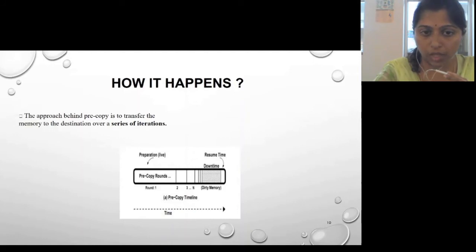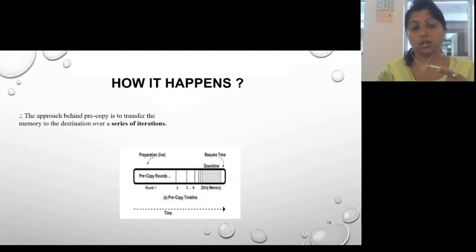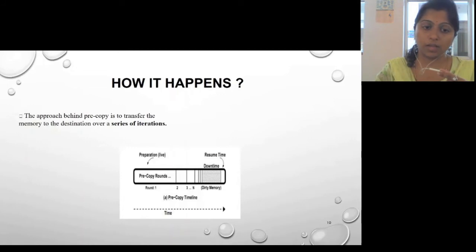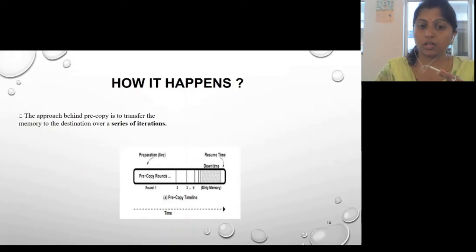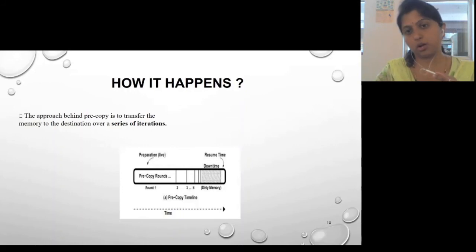As seen in the diagram, downtime occurs when there is a dirty page — a page not yet available at the destination while changes are still happening at the source. We can see that after transferring n number of memory pages, there is a downtime at the end. This is a major drawback of the pre-copy approach, as it prevents responding to client requests during that period.